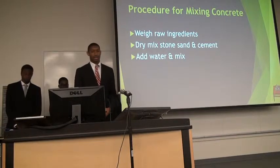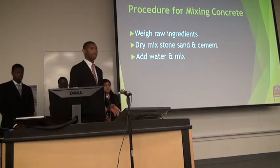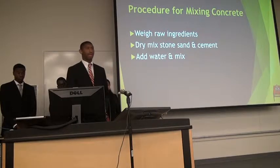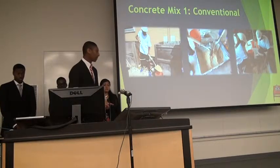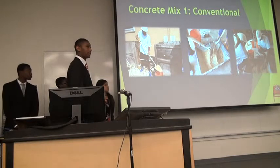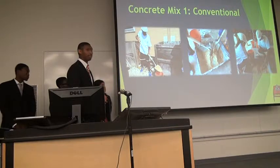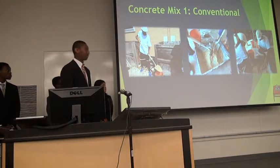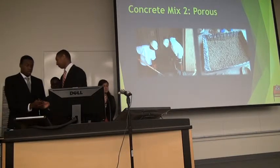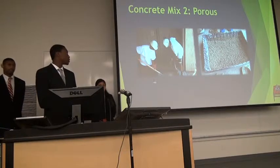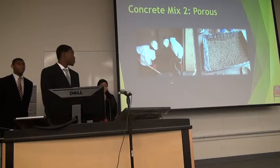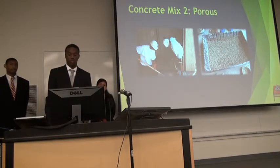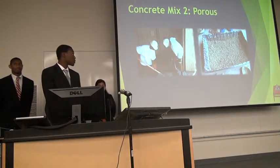The procedure for mixing the concrete: first we weighed the raw ingredients in buckets using a scale. Then we dry mixed the cement and sand together, and after that we added the water and mixed again. We retrieved materials from outside and placed them in buckets, then dry mixed the sand and cement, and then added the water. We put everything in a bucket, then into a tray, dry mixed the cement and stone first, then mixed again with water.